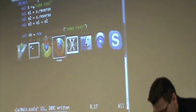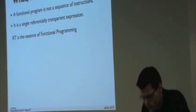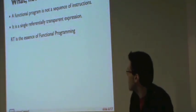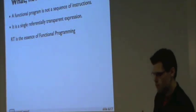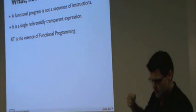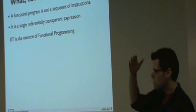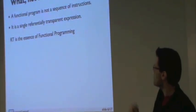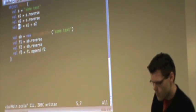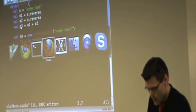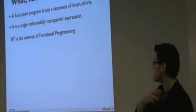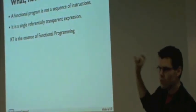The idea with referentially transparent expressions is that we talk about *what*, not *how*. We talk about what we want our program to do, not how we want it done. A program that was not referentially transparent was a sequence of mutations of the StringBuffer. A functional program is not a sequence of instructions, but a single referentially transparent expression. In functional programming, we take this idea all the way - even programs that do IO, send files across the network - all of them are a single referentially transparent expression.